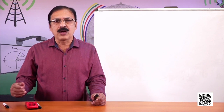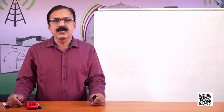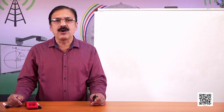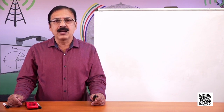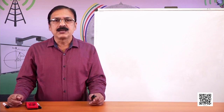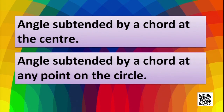Today we are going to discuss some more terms like angle subtended by a chord at the center and angle subtended by a chord at any point on the circle. Let's try to understand what we mean by angle subtended by a line.